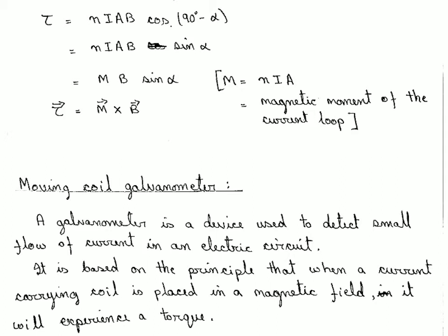We now come to the moving coil galvanometer. A galvanometer is a device used to detect small flow of current in an electric circuit. We used this device in Chapter 3 while studying Wheatstone bridge, meter bridge, and potentiometer. The principle on which it is based is that when a current-carrying coil is placed in a magnetic field it experiences a torque equal to NIAB cos theta.